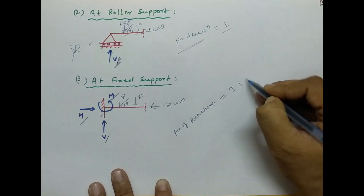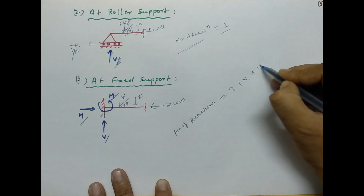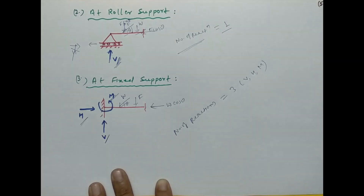Fixed support के case में number of reactions three होते हैं: vertical reaction, horizontal reaction, और moment reaction.